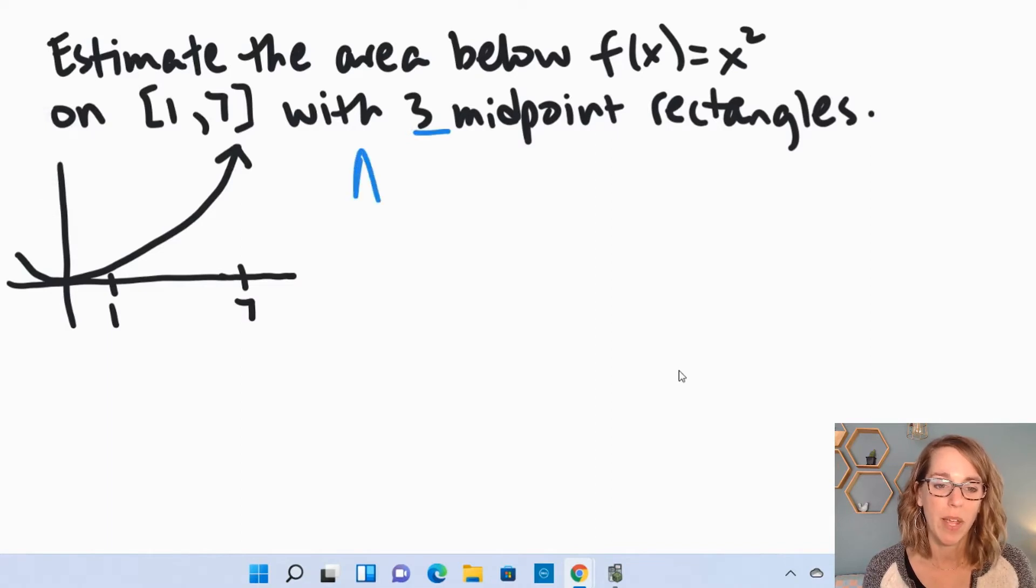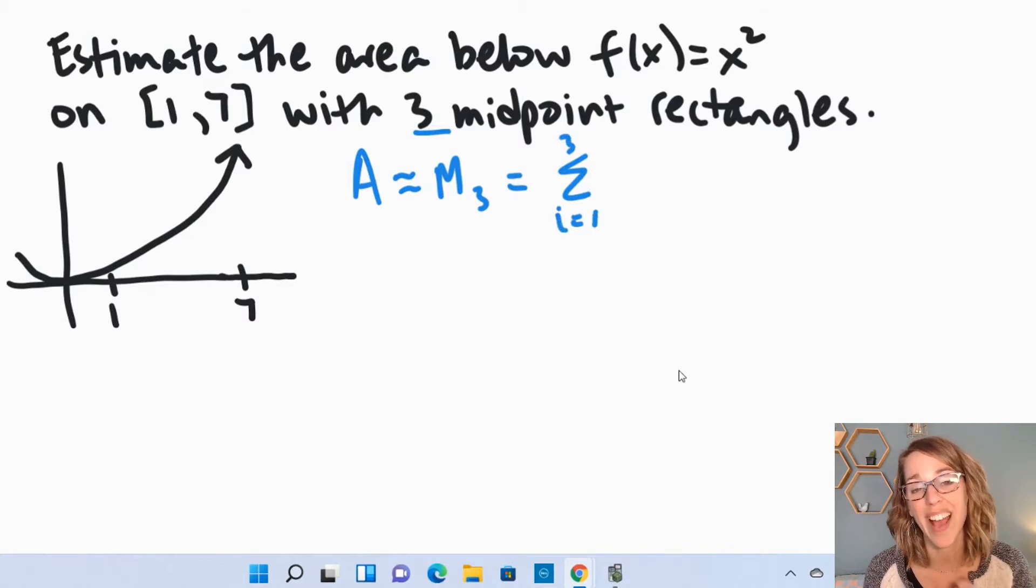So I'm going to estimate my area using three midpoint rectangles, so M sub 3, and this is going to be equal to the summation, as i runs from 1 to 3. i counts the number of rectangles, and just super generically, it's going to be height times width, so h sub i, w sub i. w sub i is our delta x.